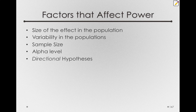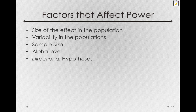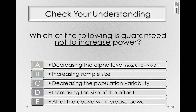So, we have many factors that affect power, and some of these are more or less under our control. The size of the effect in the population is generally not something we can change, but sometimes it is — suppose we're doing a study on the effect of a drug; rather than give our individuals 10 mg of the drug, what if we gave them 100 mg? Assuming that it's a safe dose, we want to give the maximum amount of the drug in order to measure the effect, since larger effects will be easier to find. The variability in the populations isn't usually under our control, but sometimes we can change our experimental situation to reduce the amount of extraneous variability we measure. Now, sample size, alpha level, and directional hypotheses are under our control — when possible, we want to set these values such that we maximize the amount of power we have. Given what I've told you about factors affecting power, check your understanding with this question: which of the following is guaranteed not to increase power? I'll let you read these and I'll follow up with the answer in the next video.